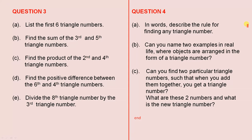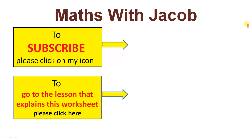Can you find two particular triangle numbers such that when you add them together, you get a triangle number? What are these two numbers and what is the new triangle number? So this video has given us some exercises to allow us to practice square numbers and triangle numbers. Can you find one more?